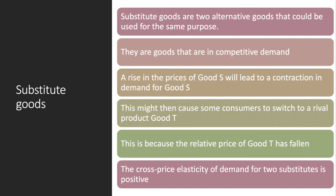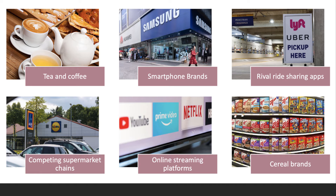Therefore, the cross price elasticity of demand for two substitutes is positive. Here are some examples of substitutes. Classic examples of the genre: tea and coffee, your choice of smartphone brand, which rival ride-sharing app you decide to use, intense competition in the supermarkets in the UK, your choice of viewing on online streaming platforms, and the classic choice of different brands of cereal in the supermarket.